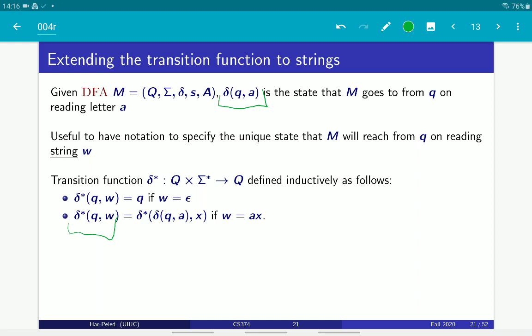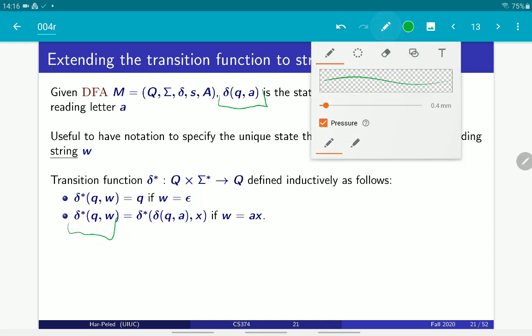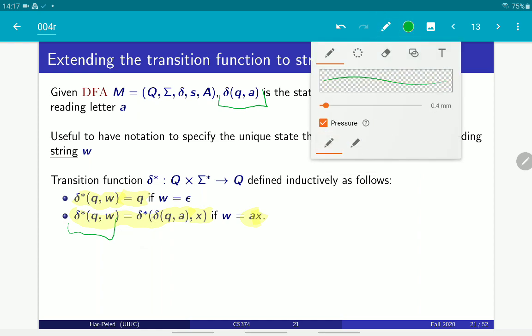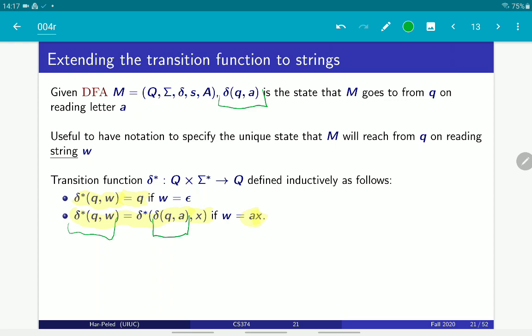So it's defined recursively or inductively. The first line states that if the string is empty, then the state delta star of Q on the empty string is just Q itself. And the second line is just a recursive definition. It says, if the string can be written as AX, first the letter A and then the string X, then what we do, first we compute the state that we will arrive from Q to A under, and then we apply to this state, we apply the string X recursively.